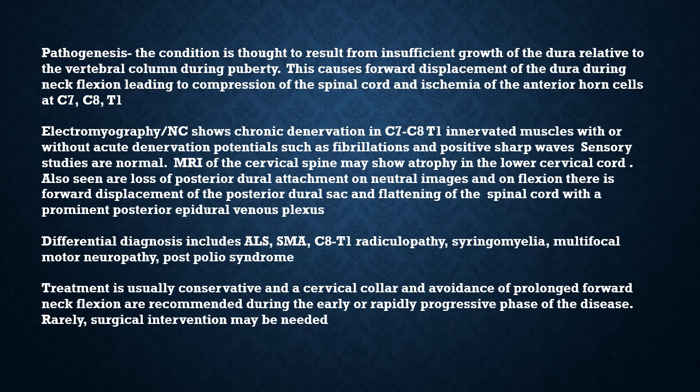This occurs at C7, C8, and T1. EMG and nerve conduction studies show chronic denervation in C7, C8, T1 innervated muscles, with or without acute denervation potentials like fibrillations and positive sharp waves. Sensory studies are normal. MRI of the cervical spine may show atrophy in the lower cervical cord.